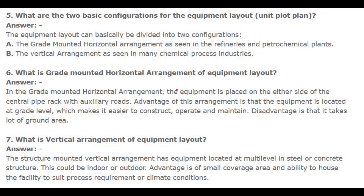Number 5: What are the two basic configurations for the equipment layout unit plot plan? Answer: The equipment layout can basically be divided into two configurations: A. The grade-mounted horizontal arrangement, as seen in refineries and petrochemical plants. B. The vertical arrangement, as seen in many chemical process industries. Number 6: What is grade-mounted horizontal arrangement? Answer: In the grade-mounted horizontal arrangement, the equipment is placed on either side of the central pipe rack with auxiliary roads. Advantage: equipment is located at grade level, which makes it easier to construct, operate, and maintain. Disadvantage: it takes a lot of ground area.